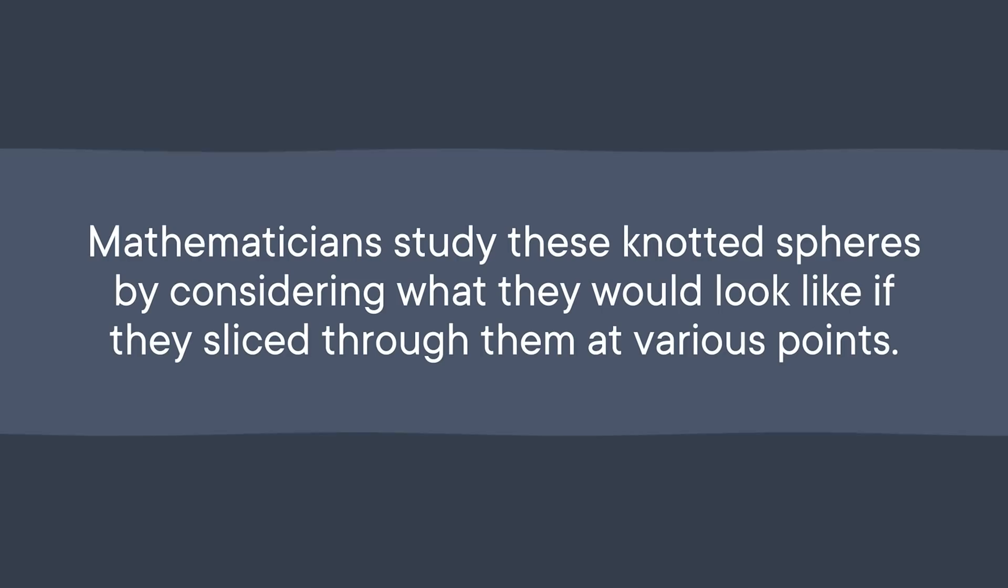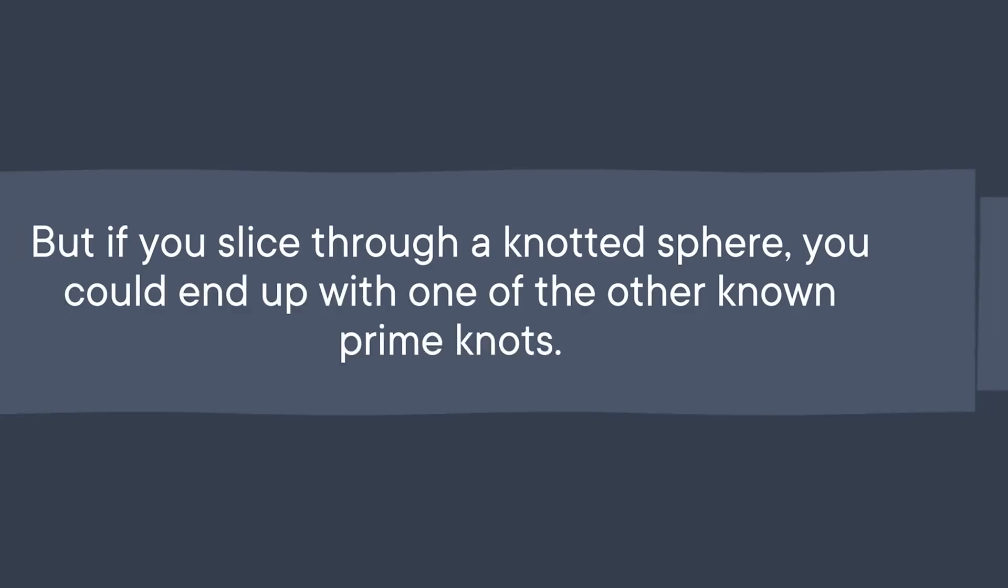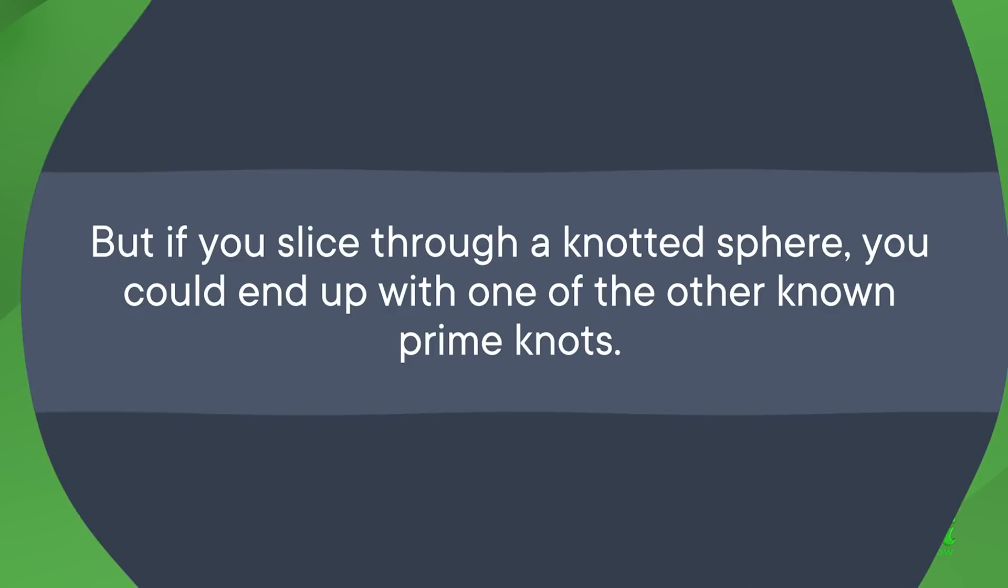Mathematicians study these knotted spheres by considering what they would look like if they sliced through them at various points. A slice through an unknotted sphere would be the trivial knot, a simple loop. But if you slice through a knotted sphere, you could end up with one of the other known prime knots. Figuring out slicedness — that is, whether a given knot can be produced by slicing up a 4D knotted sphere — is another way theorists can try to distinguish between different knots.